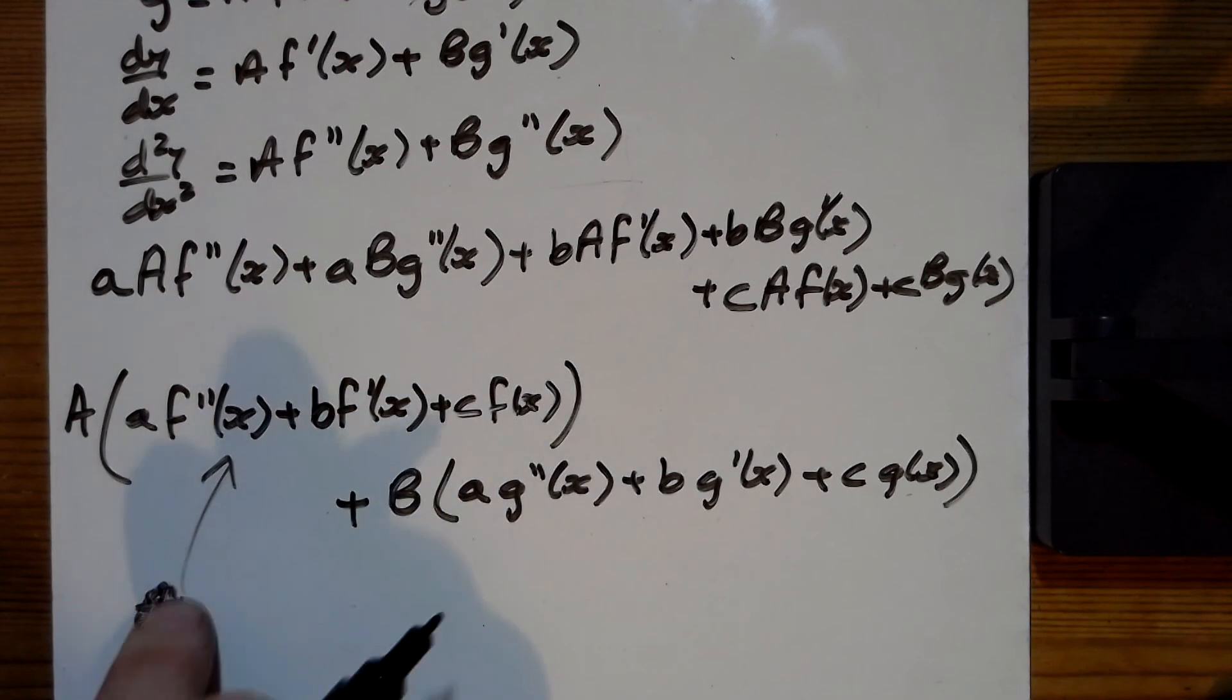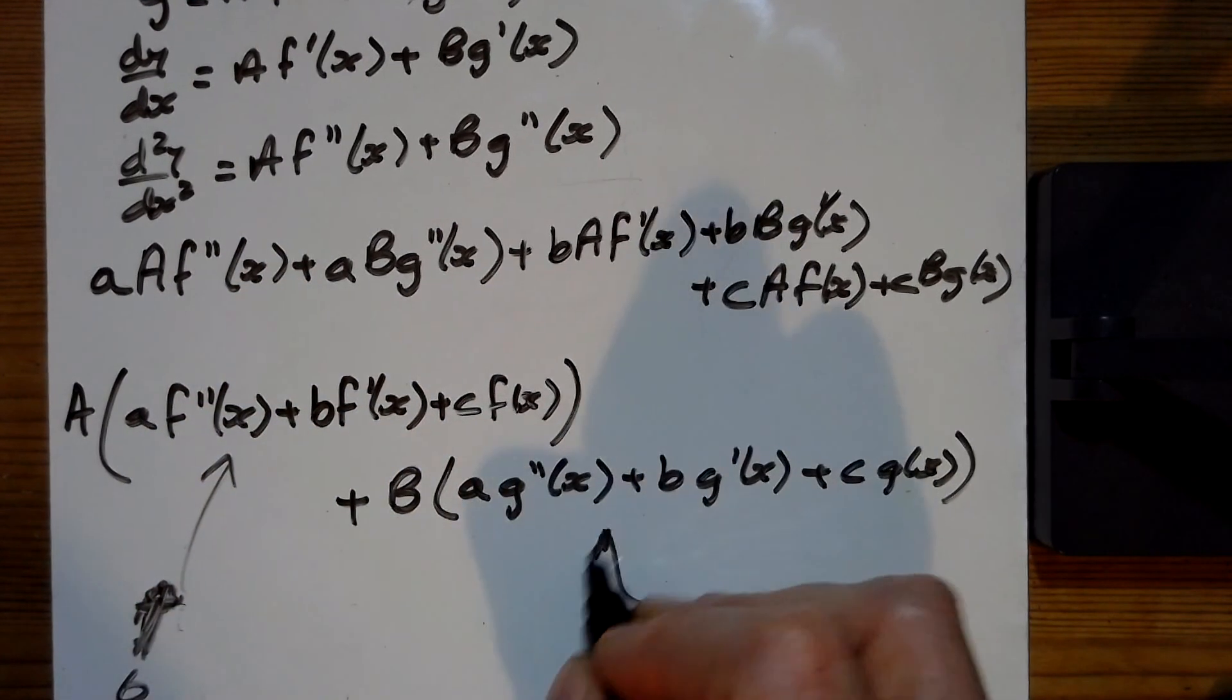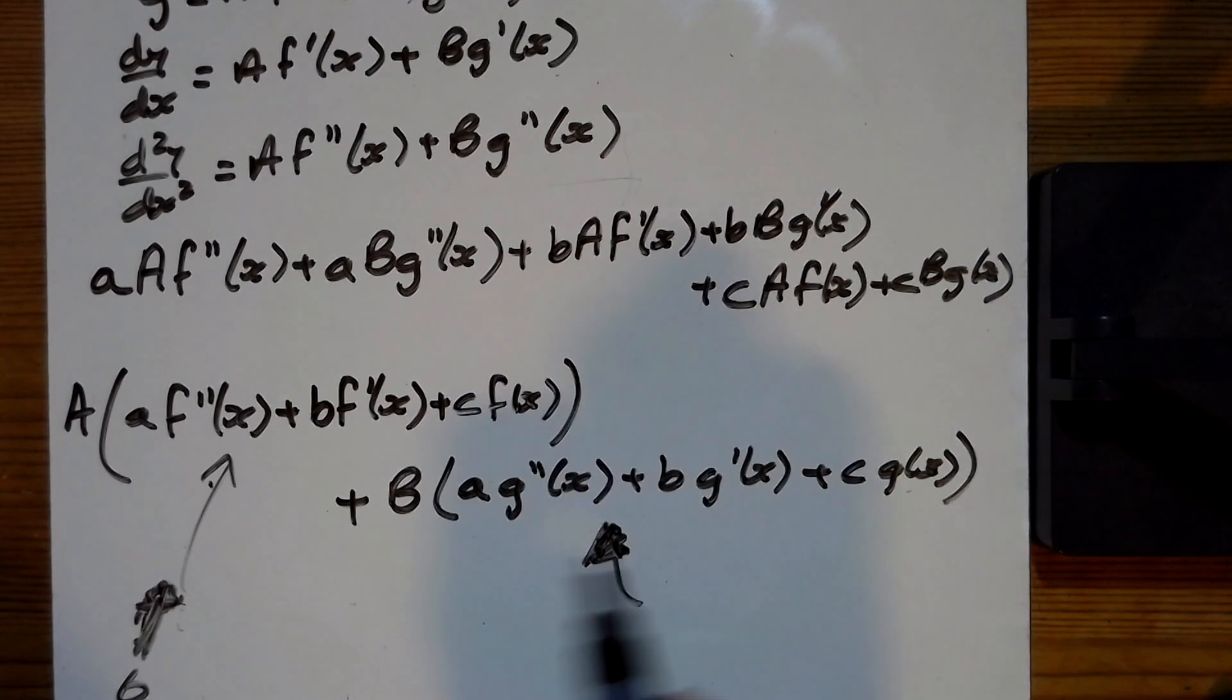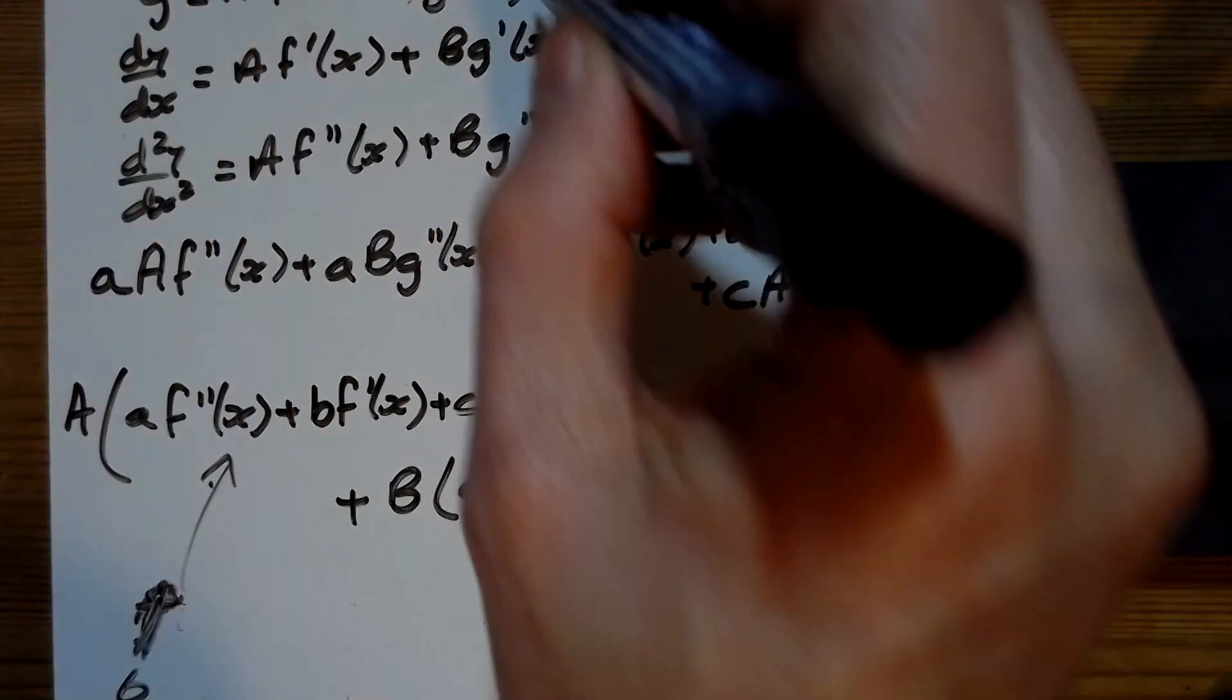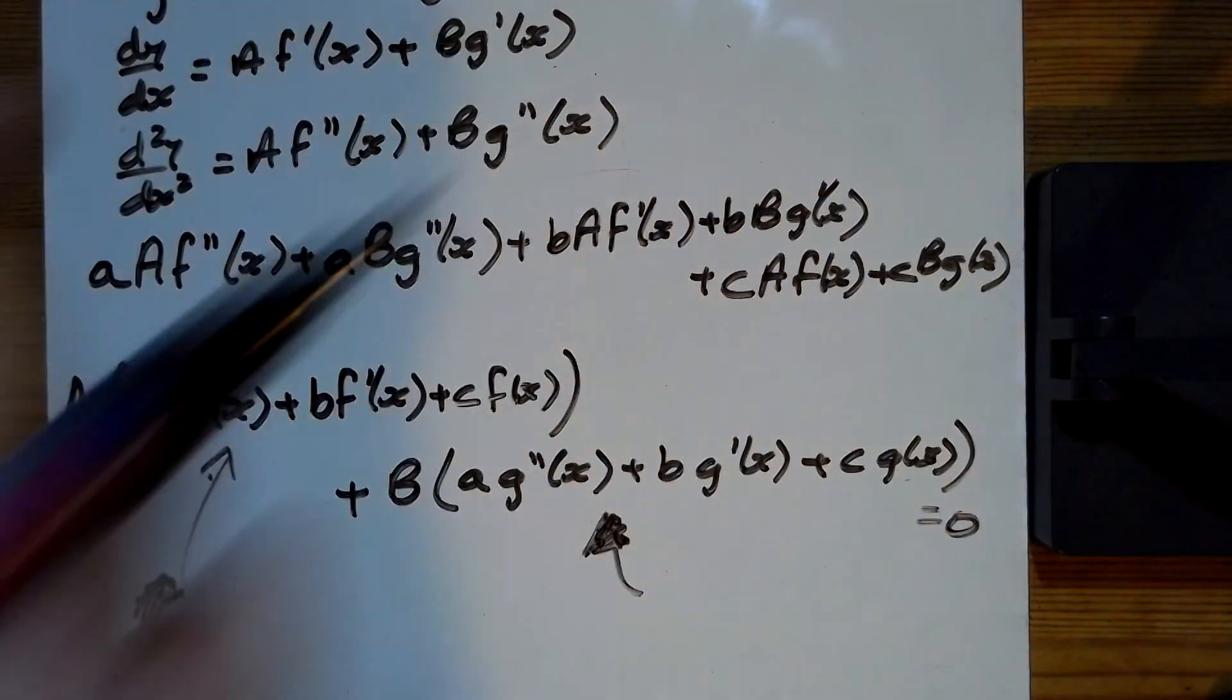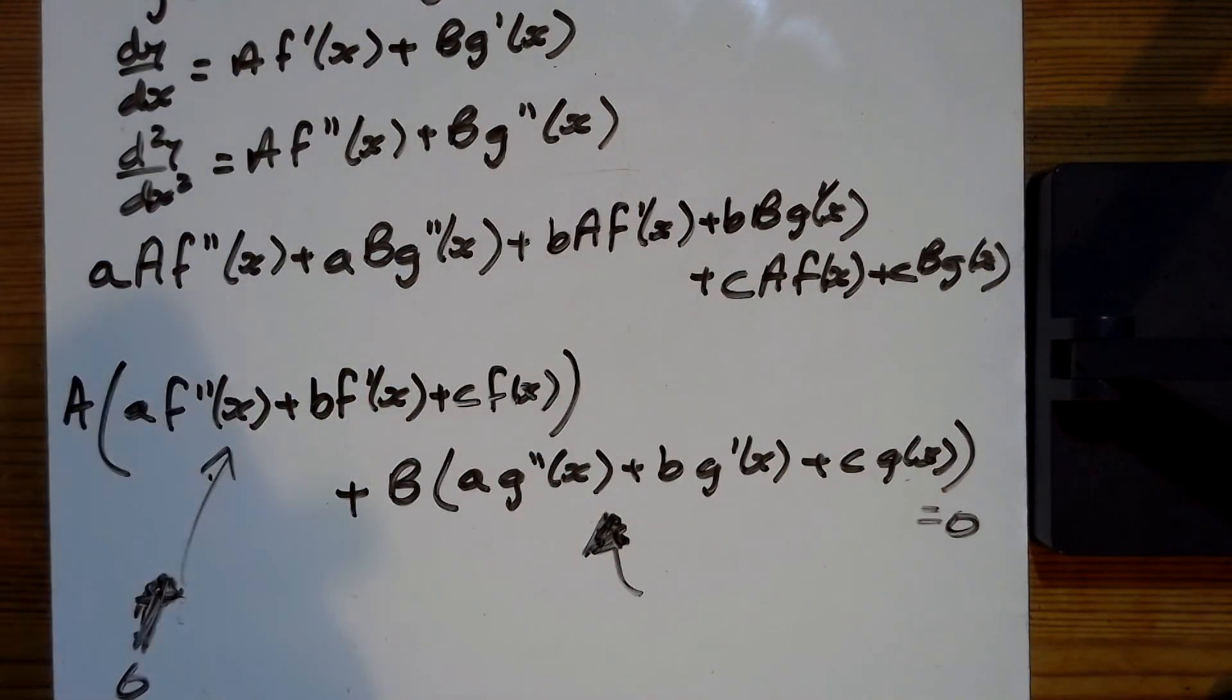And we've also said that g of x is the solution of this equation as well, so both of these are zero. And so this thing here is equal to zero, so we suggested is a solution to the original.